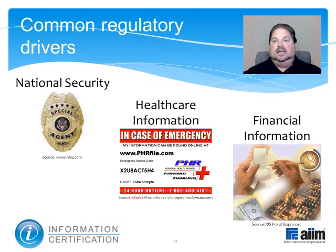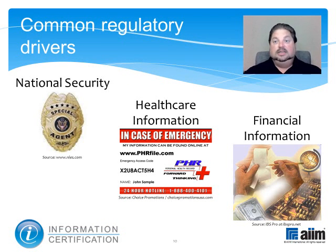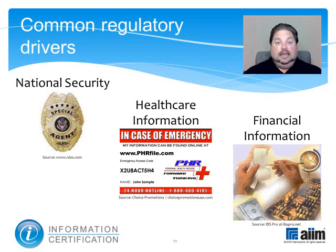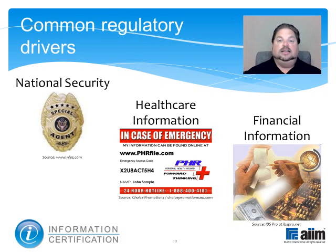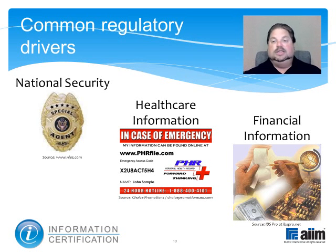These different types of security are getting more and more attention as regulatory activity has intensified and compliance has become the watchword, especially in the realms of national security, personal health care privacy, and financial information. In the United States, the key regulations in each of these categories are: the USA Patriot Act of 2001, which reduced restrictions on law enforcement agencies' ability to search telephone, email communications, medical, financial, and other records; HIPAA, the Health Insurance Portability and Accountability Act of 1996, which required national standards for electronic health care transactions and addressed the security and privacy of health data; and the Sarbanes-Oxley Act of 2002, which set new or enhanced accounting and reporting standards for all U.S. public company boards, management, and public accounting firms.